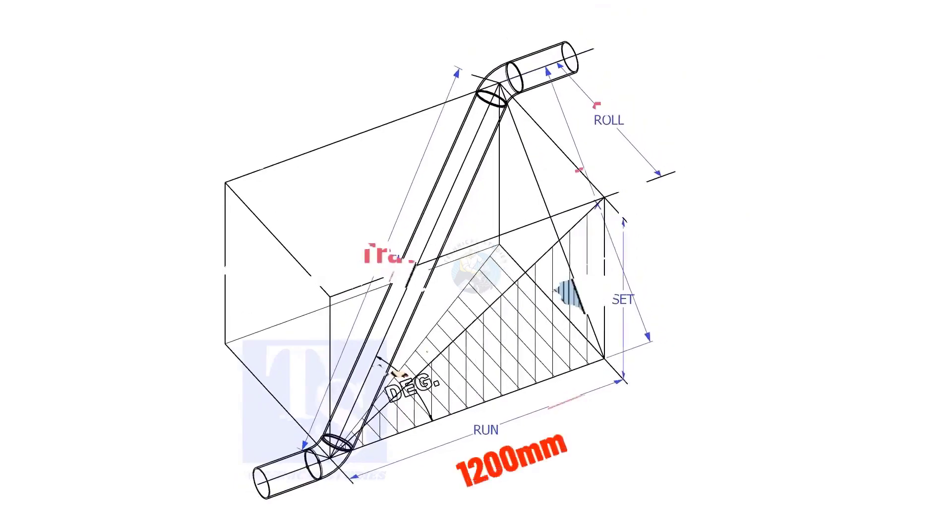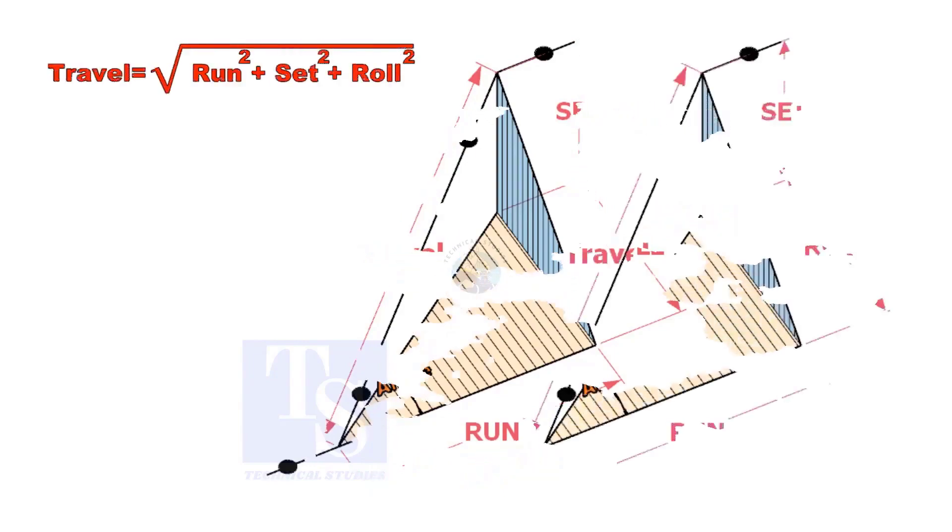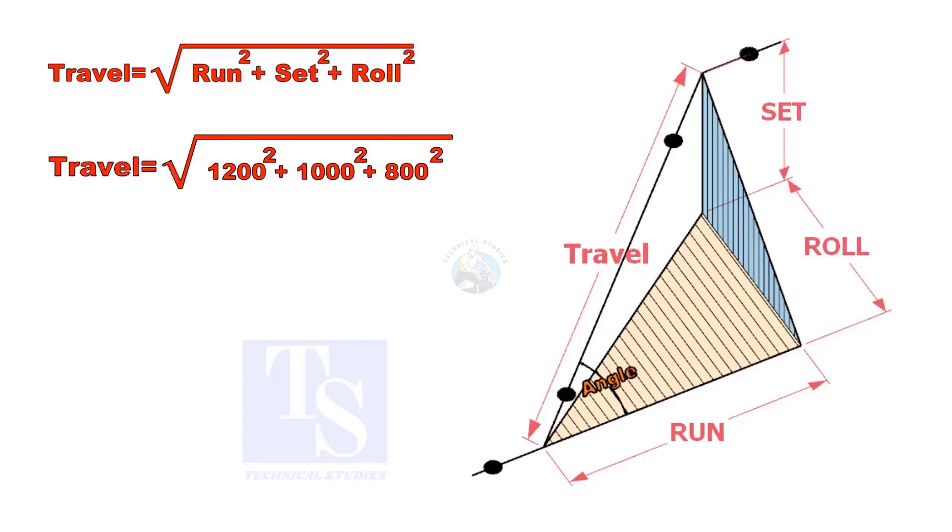Assume that the run is 1200 mm, set is 1000 mm and the roll is 800 mm. Calculate the travel length. Let us calculate.